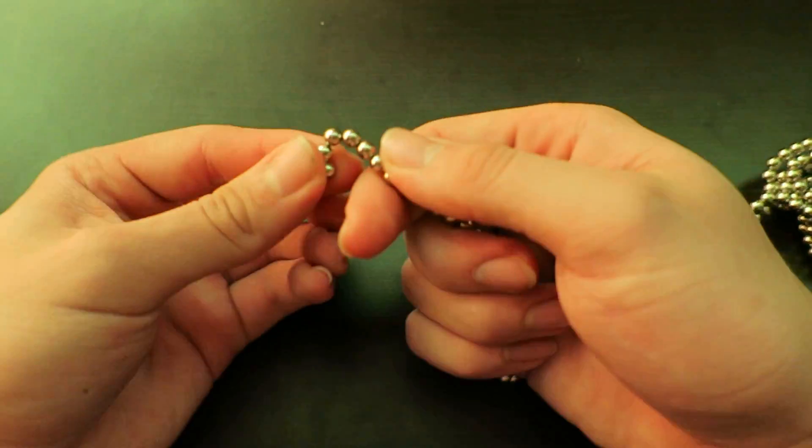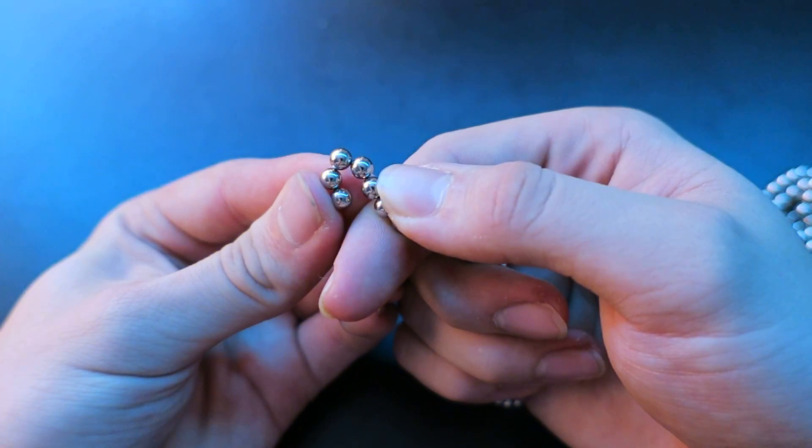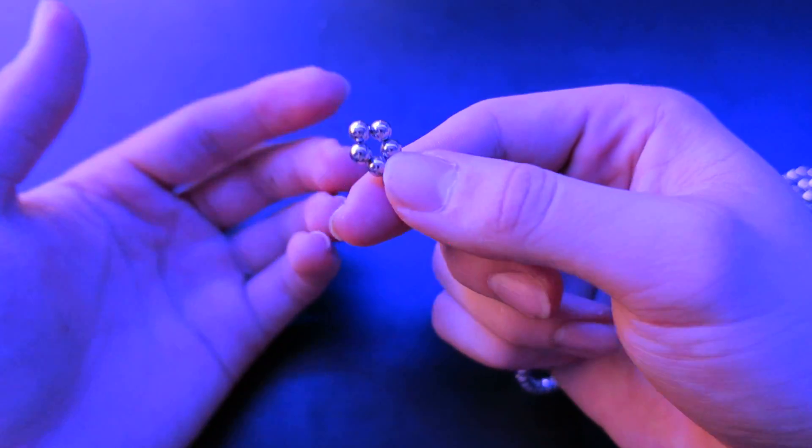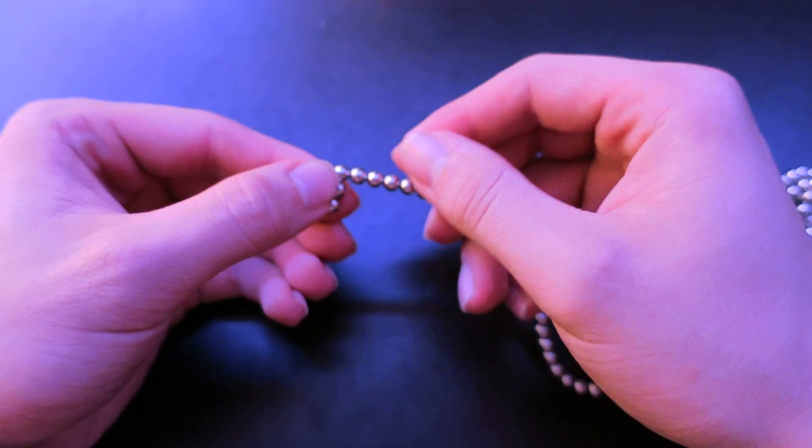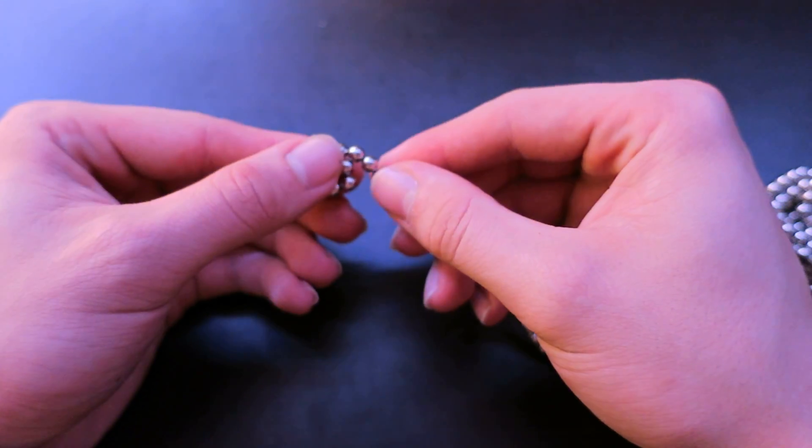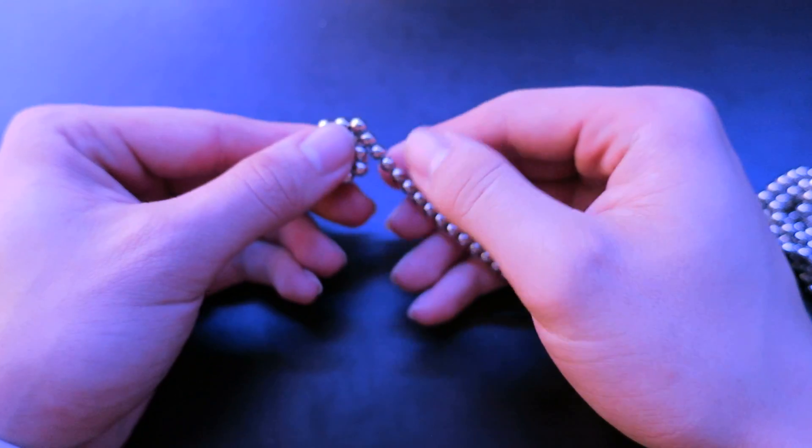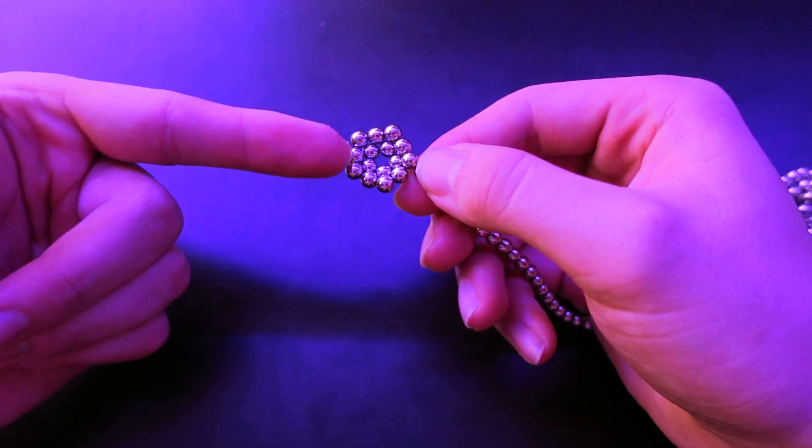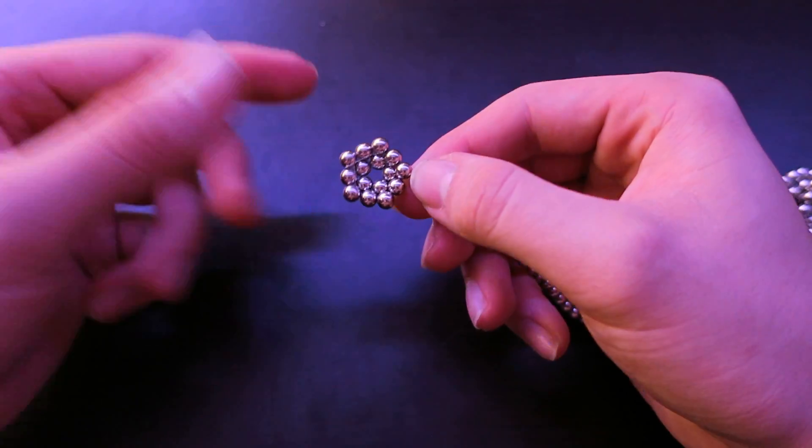And what you do is you take five and make them into a pentagon like that. And then wrap it around three times. So three layers like that. So here's one layer and as you can see it's two rows.